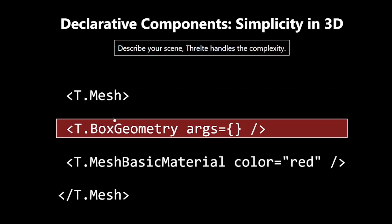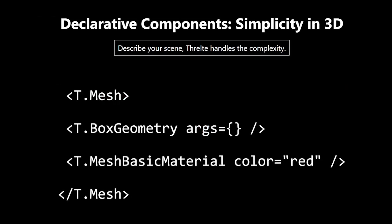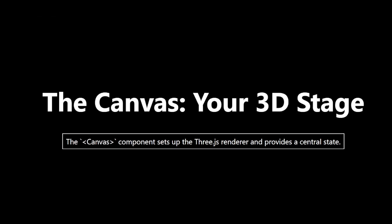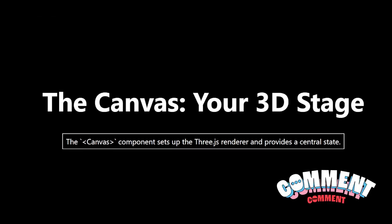The canvas is your 3D world. Every Threlte application starts with a canvas component. This is like your virtual stage where all the 3D magic happens. It sets up the 3.js renderer and provides a central state for all the components in your scene.